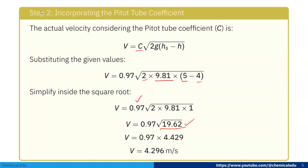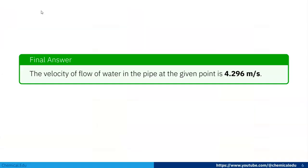which equals 4.296 m/s. So the final answer is: the velocity of flow of water in the pipe at the given point is 4.296 meters per second. That's it, thank you.